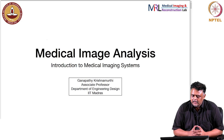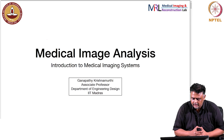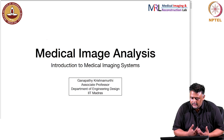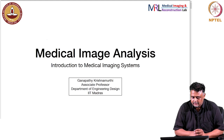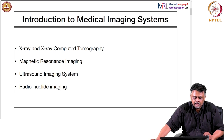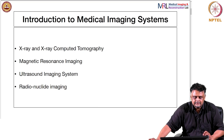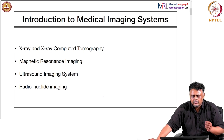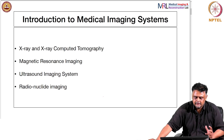Hello and welcome to the medical image analysis course. This is one of the introductory lectures about medical imaging systems in general, where you will get an idea of what the images produced by these imaging systems actually represent. These are the four imaging systems we will look at: x-ray projection radiography, x-ray computed tomography, magnetic resonance imaging, ultrasound imaging, and radionuclide imaging.